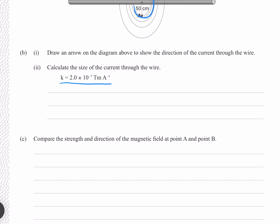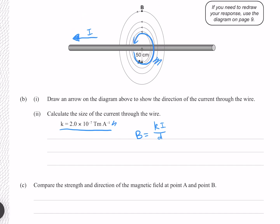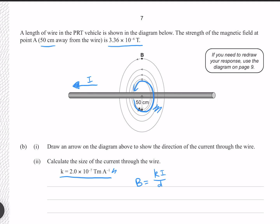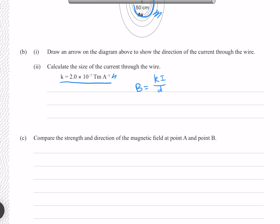Calculate the size of the current through the wire. Using the equation from our formula sheet, B = ki/d, where we know k, our distance of 50 centimeters, and our magnetic field strength. Solving for current: multiply both sides by d, then divide both sides by k. Putting our numbers in and remembering to convert 50 centimeters to 0.5 meters gives exactly 8.4 amps.